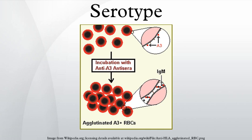Vibrio cholerae, the species of bacteria that causes cholera, has over 200 serotypes based on cell antigens. Only two of them have been observed to produce the potent enterotoxin that results in cholera: O1 and O139. Serotypes were discovered by the American microbiologist Rebecca Lancefield in 1933.